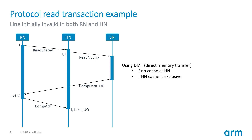Alternatively, we could have a home node implementation that does not have a local cache, or where the local cache is configured to be non-inclusive towards shared data. For this scenario, CHI allows the slave node to send the data directly to the requester in order to reduce the overall miss latency. This is called DMT, or direct memory transfer. In this case, the requester will always receive the data in the unique clean state and will therefore transition to unique clean.